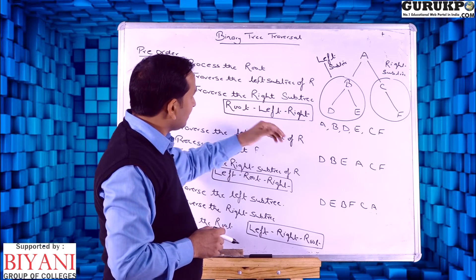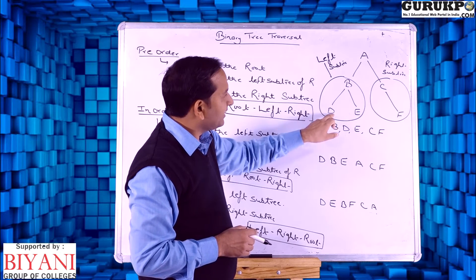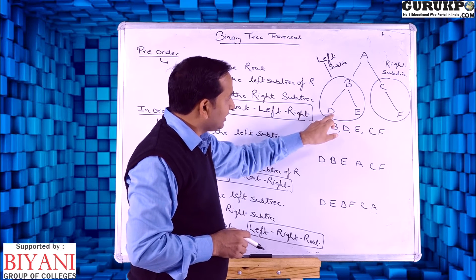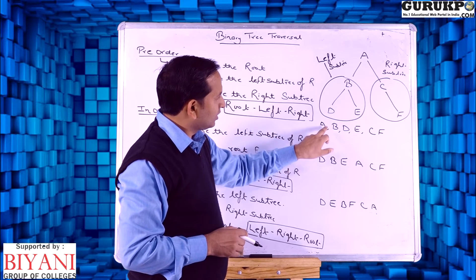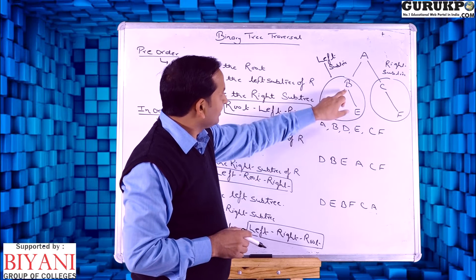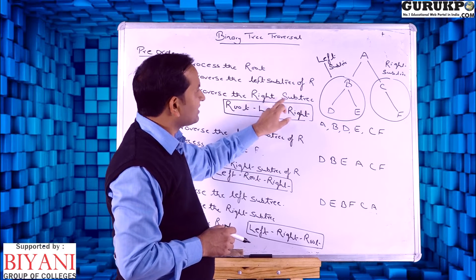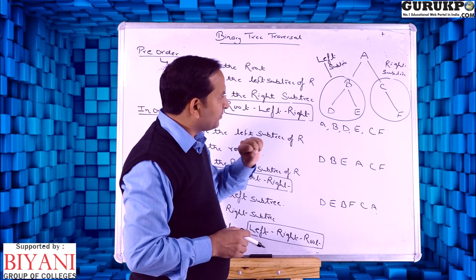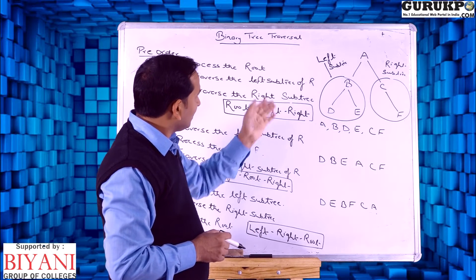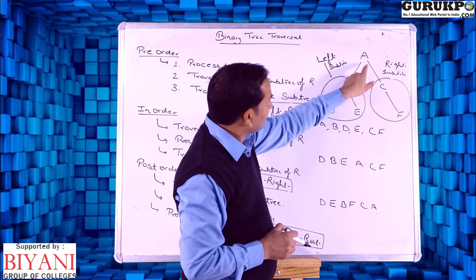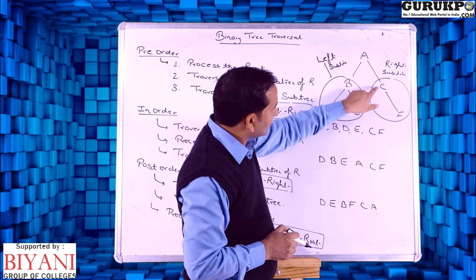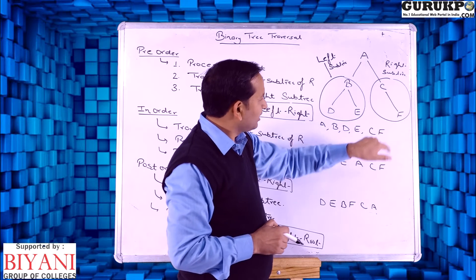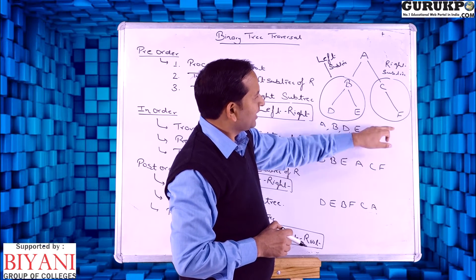Then again, B is the root node of D and E. We follow again the left subtree — the next node is D — so the order so far is A, B, D. Then after left, we follow the right subtree; the right node is E. Finally the left subtree is complete, then control goes to the right side. A is already traversed, then C is the root node with child node F, so we follow C then F.